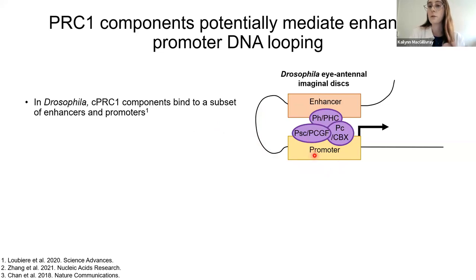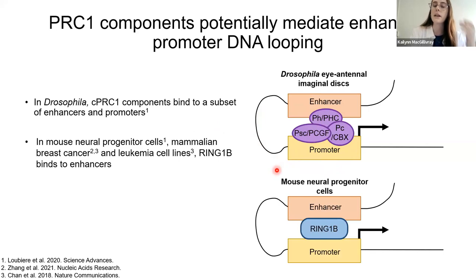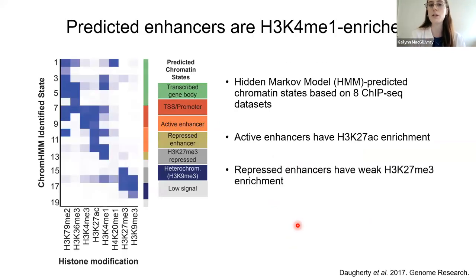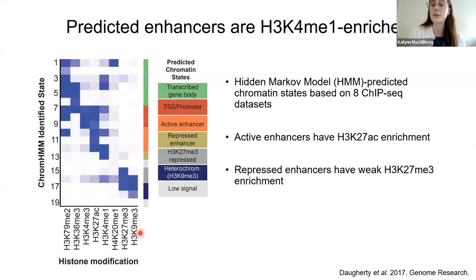As shown by Arnit, we found enrichment of H2A ubiquitylation at predicted enhancers in C. elegans. These predicted enhancers come from hidden Markov model predicted chromatin states based on ChIP-seq datasets for eight histone modifications, where enhancers are enriched for H3K4 monomethylation and subdivided into active enhancers — which additionally have H3K27 acetylation — and weak enhancers, which show weak H3K27 trimethylation enrichment.